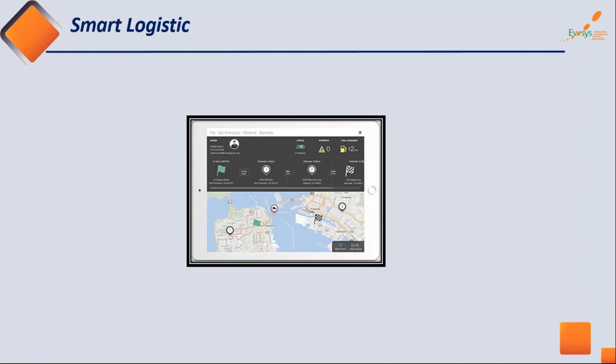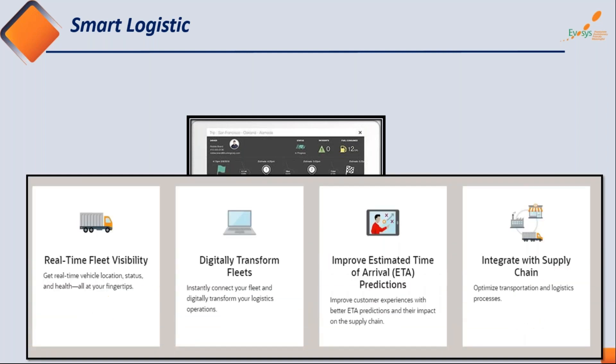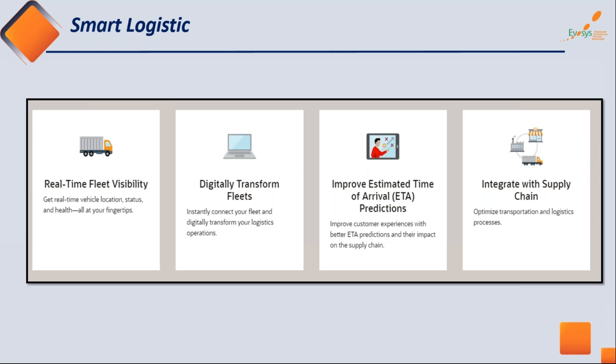Another domain application is smart logistics. People are now talking about customers knowing where their order is, from which route it came, and at what temperature — especially in food processing and pharmaceutical industries. The smart logistics solution addresses real-time fleet visibility, digital transformation of the fleet, improving estimated time of arrival, and integration with the supply chain. You can monitor your real-time fleet and digitally transform it.